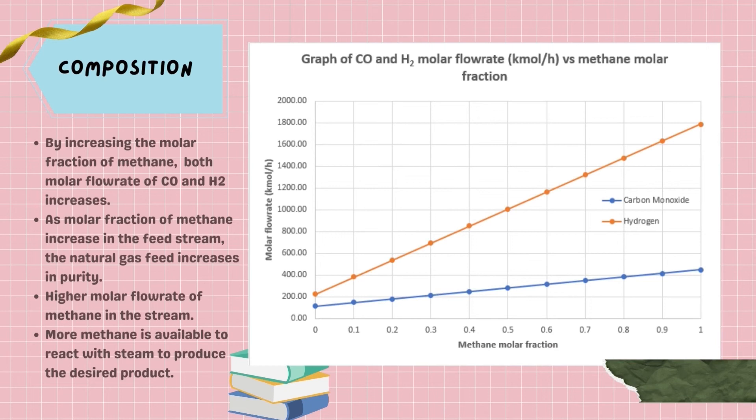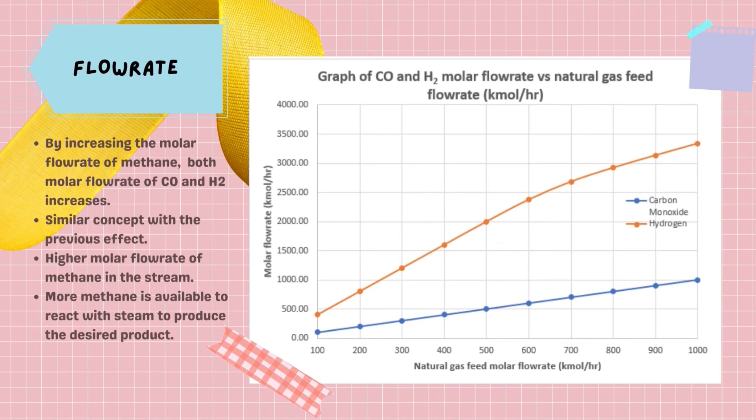Thirdly, the composition of inlet natural gas fed into the system is studied. As the molar fraction of methane increased from 0.1 to 1.0, the purity of methane increases in the natural gas feed. As a consequence, the product of both SMR and WGS process respectively carbon monoxide and hydrogen were observed to be increased as well. Last but not least, the flow rate of inlet natural gas feed were also studied. As the molar flow rate of methane increased, the molar flow rate of carbon monoxide and hydrogen were also increased. Similar with the composition effect, this could be explained due to the larger quantity of methane available to be reacted with steam producing the product. So, higher molar fraction and molar flow rate of methane will increase the reactor performance as more hydrogen is produced at the outlet.